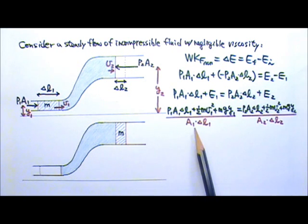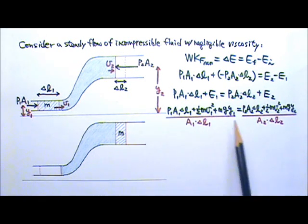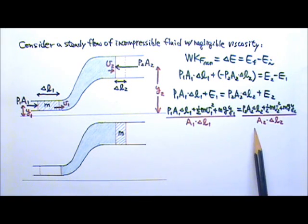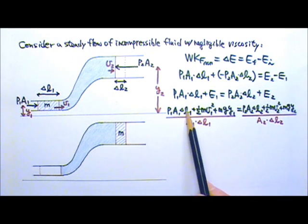Because the volume A1 delta L1 equals the volume A2 delta L2, I can divide by A1 delta L1 on this side and divide by A2 delta L2 on the other side, and these two sides will still be equal. And that means A1 delta L1 will cancel for this term.